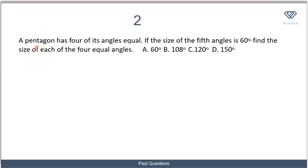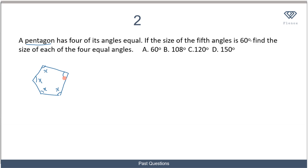Let's move on to the next question. We're told that a pentagon has four of its angles equal. A pentagon is a five-sided polygon, so we draw five sides. We're told that four of its angles are equal — let's call each equal angle x — and the size of the fifth angle is 60 degrees. We need to find the value of each of the four equal angles.